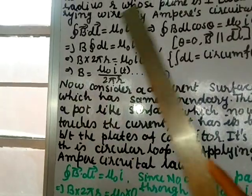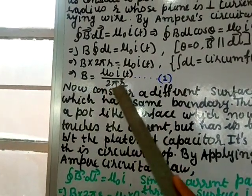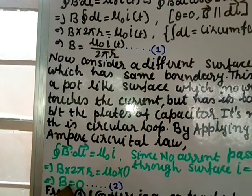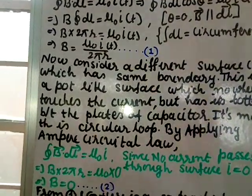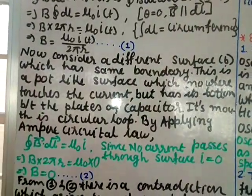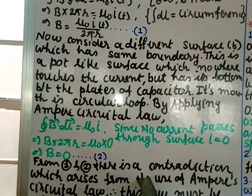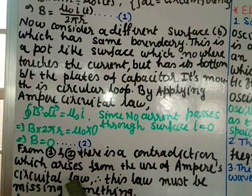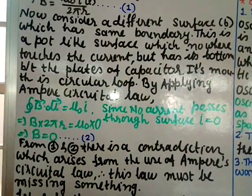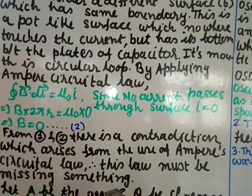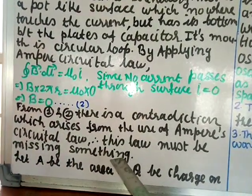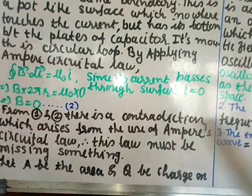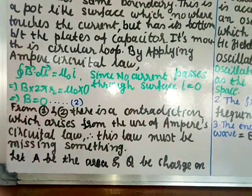From equation 1, B at point P = μ₀i(t)/2πr, and from equation 2, B at point P = 0. These are different answers — a contradiction arising from the use of Ampere's circular law. Therefore this law must be missing something, and that missing term is nothing but the displacement current, which we now need to find.